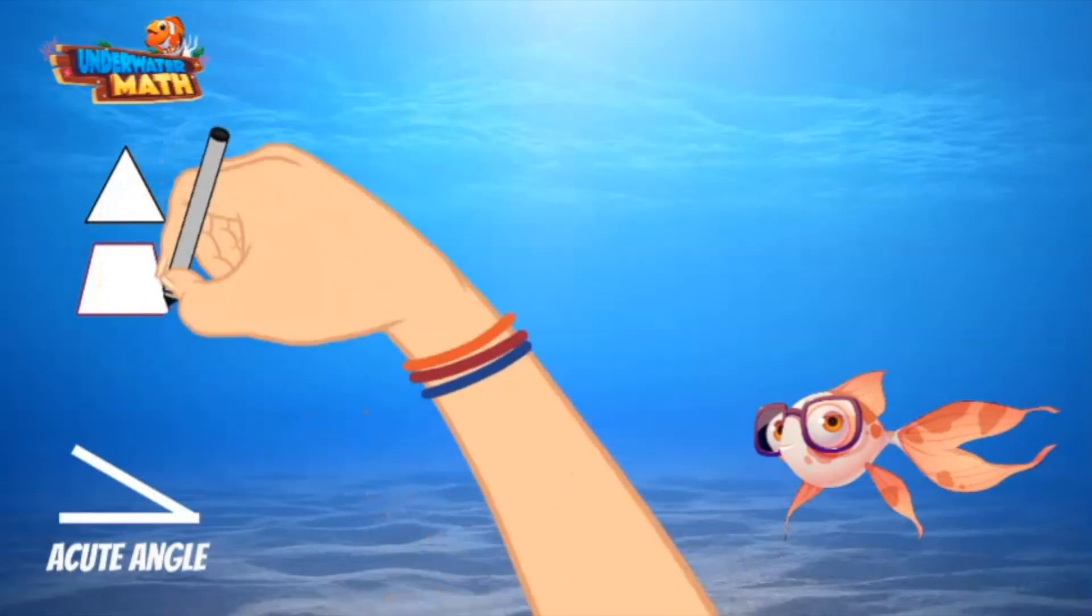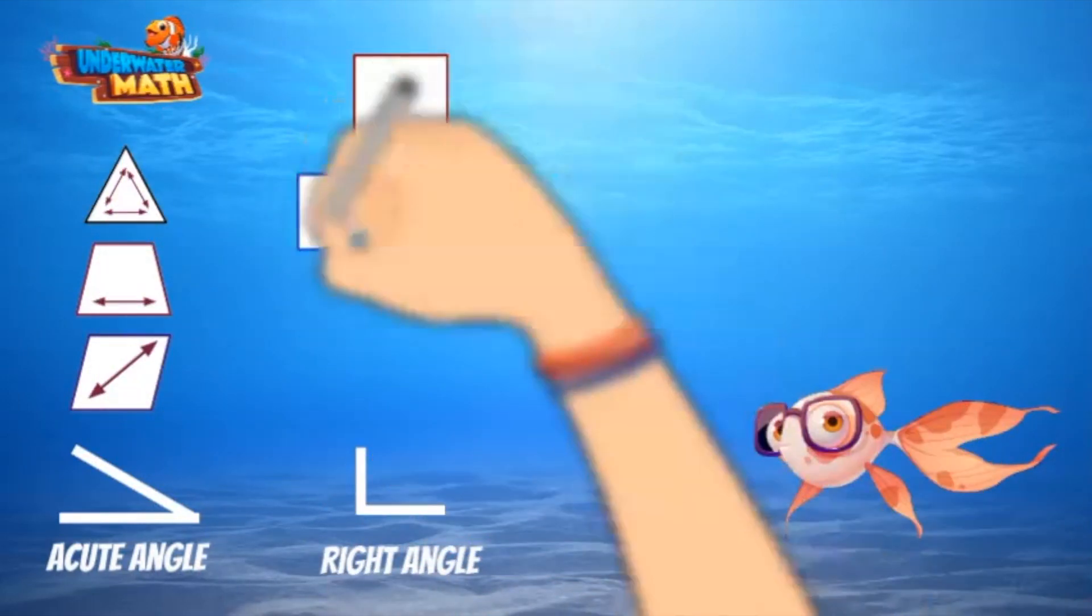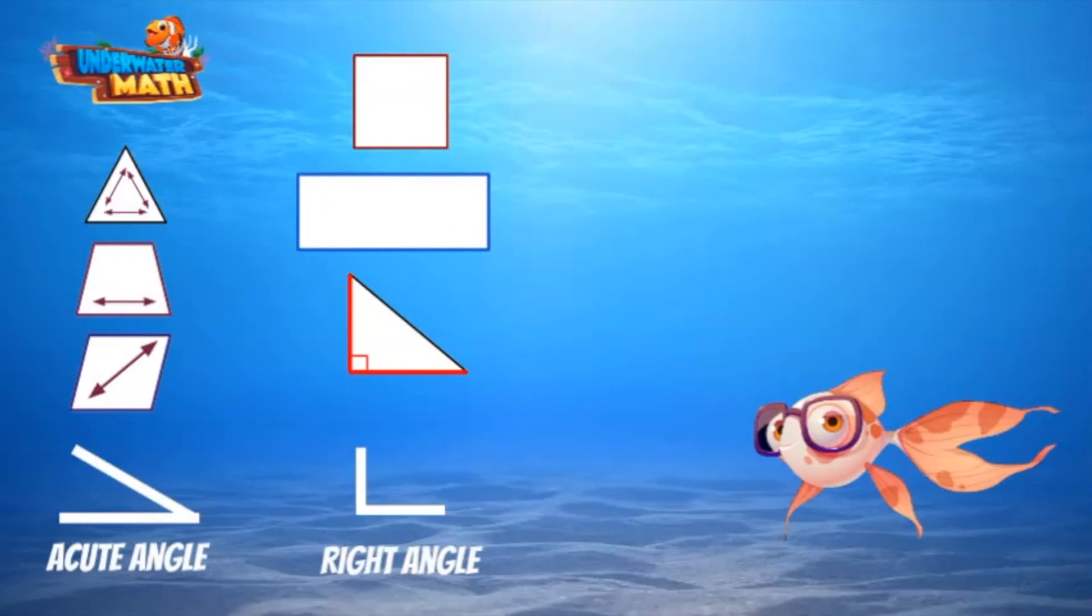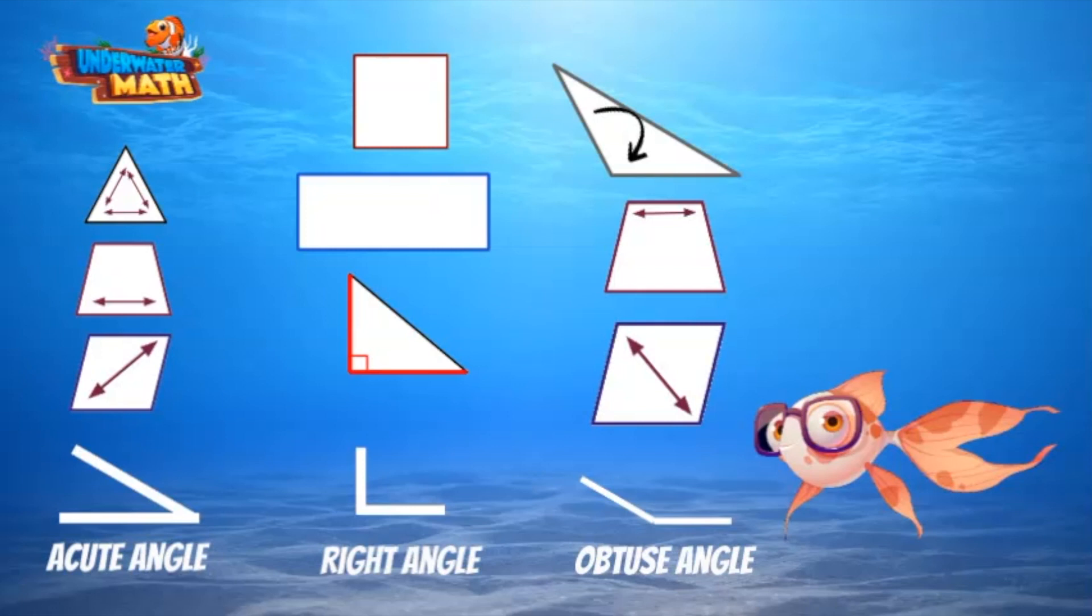Shapes such as acute triangles, trapezoids, and a rhombus have acute angles. Shapes like squares, rectangles, and right triangles have a right angle. Obtuse triangles have an obtuse angle, as do trapezoids and a rhombus. You will notice the trapezoid and rhombus have both acute and obtuse angles.